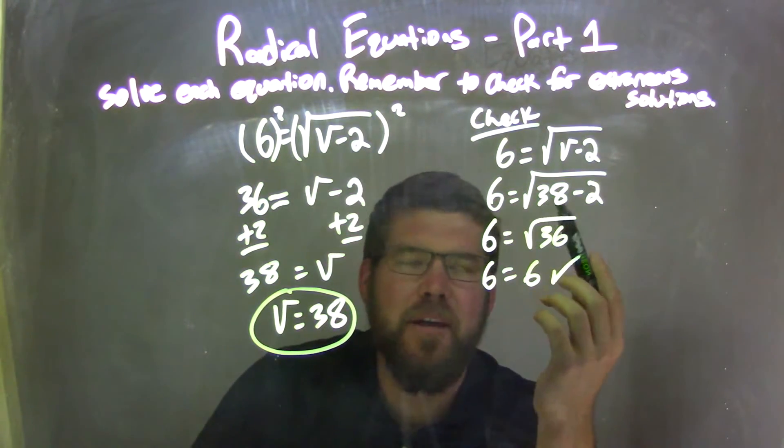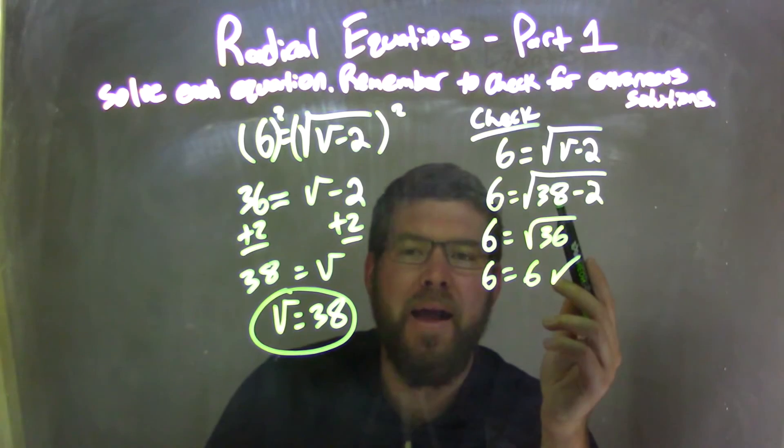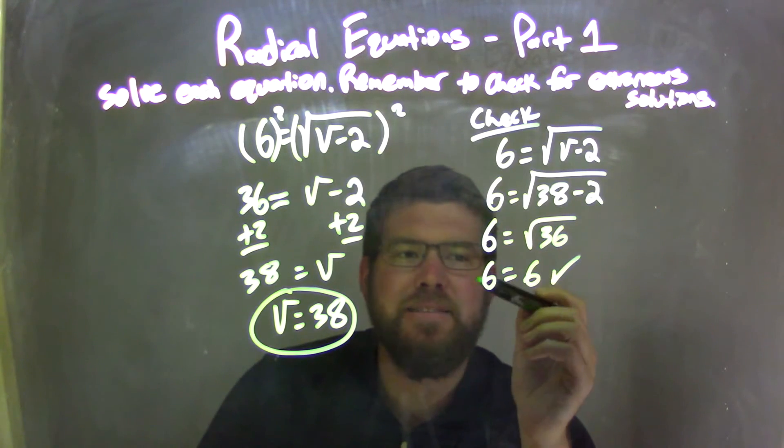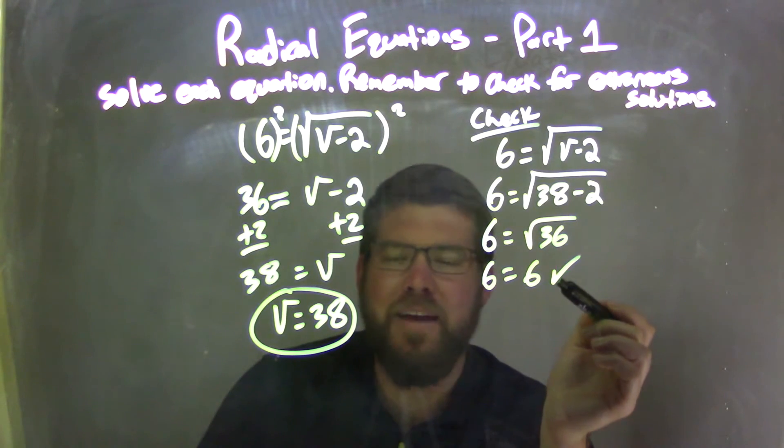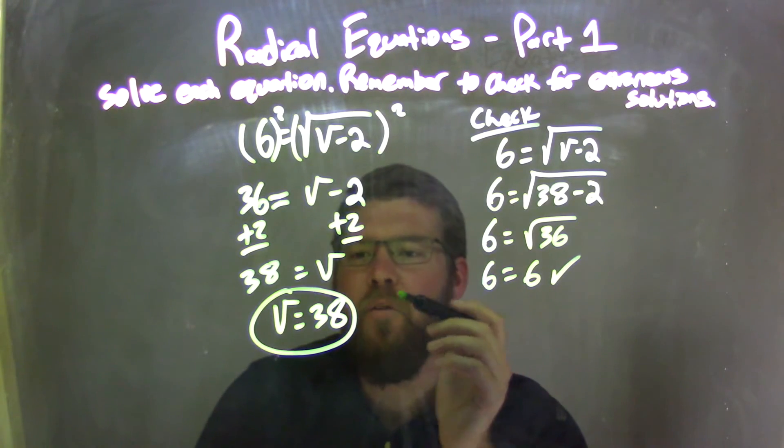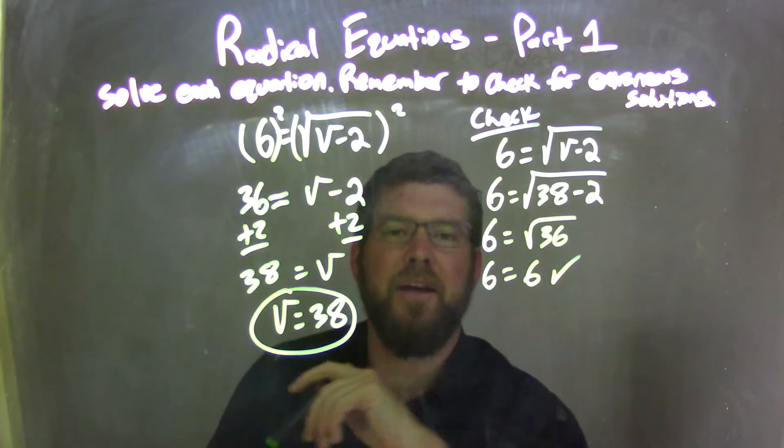I then checked it by taking my original equation, plugging 38 back in and simplifying. 38 minus 2 ended up being 36. Square root of 36 is 6. 6 did equal 6, which is great, fantastic, so I don't have an extraneous solution. And so I can confirm that v equals 38 is my final answer.